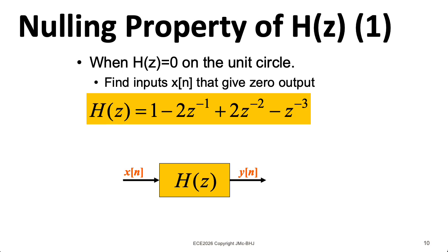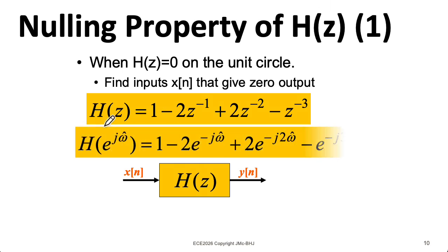Let's double check that nulling property algebraically. Here I have the system function. To get the frequency response, we plug in e to the j omega hat. Now at DC, when I plug in omega hat equals zero, this goes away, this goes away, and this goes away. Well, I guess there's a one here. So I have one minus two plus two minus one. That all adds up to zero. So that all checks out.